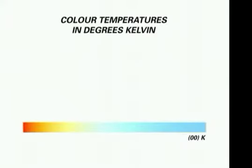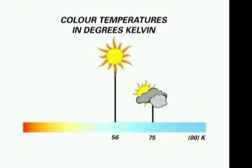Most light looks white to an untrained eye, but it can be composed of a range of different colors. For example, the color of sunlight is different in daylight, in the shade, or in cloudy conditions. Daylight, for example, is fairly blue, and fluorescent light is fairly red.